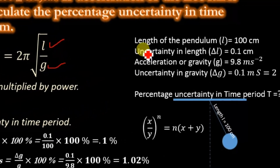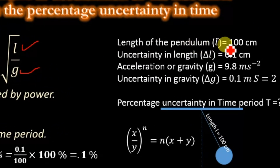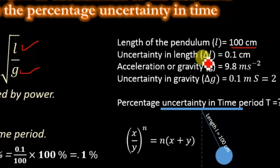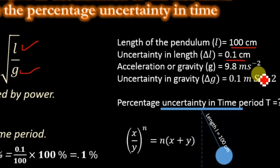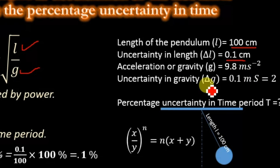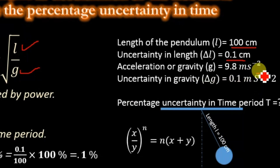The given data: length of the pendulum L = 100 cm, and the uncertainty in length δL = 0.1 cm. Similarly, the acceleration due to gravity g = 9.8 m/s², and the uncertainty in gravity δg = 0.1 m/s².